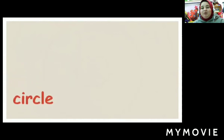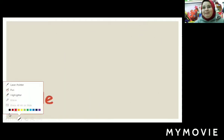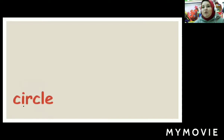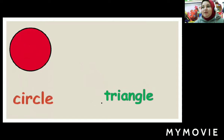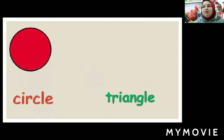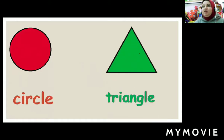Let's revise our shapes, are you ready? Okay. What's this word? Circle. So what's this shape? Circle. And what's this word? Triangle. What's the shape? Triangle.